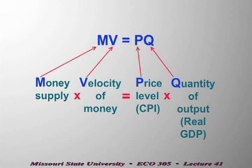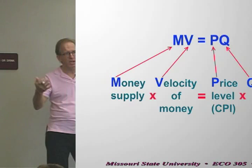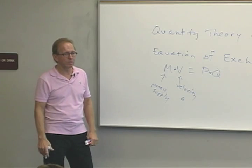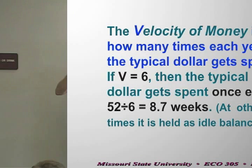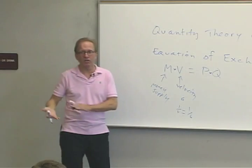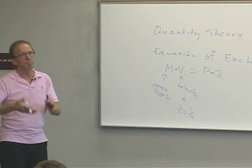If the velocity of money is six, then throughout the year the average dollar gets spent six times. When we talk about dollars, we're talking about both currency dollars as well as checking account dollars. Sometimes economists will talk about the inverse of that, one over V. So if velocity is six, one over V is one-sixth — meaning the average dollar is held for two months before being spent again.